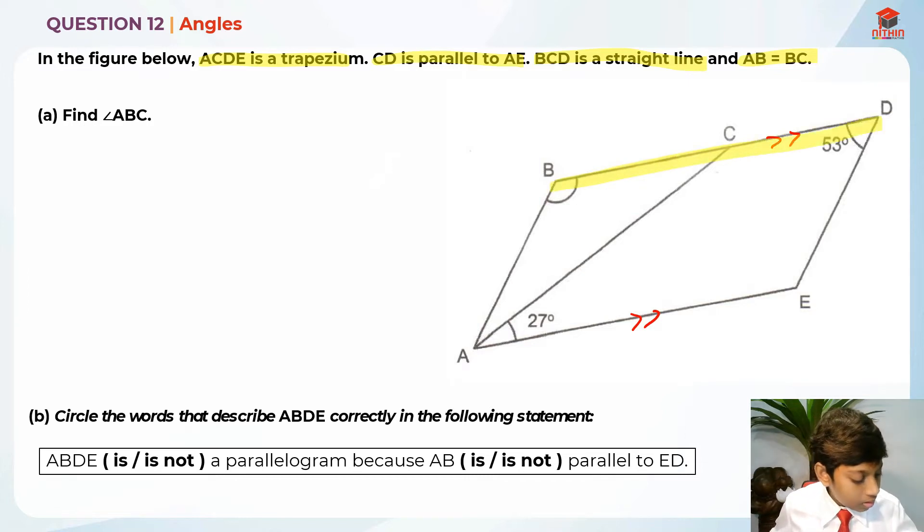BCD is over here. So if this is a straight line, that actually means that this line is actually parallel to this line already. So instead of drawing the two parallel lines over here, I'm going to draw it in between both of them, so that it can be on our reference always. The next thing they're telling us that AB is equal to BC.